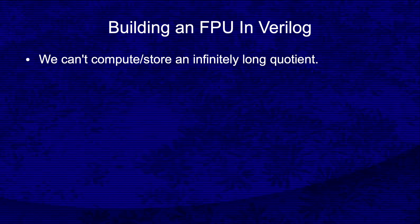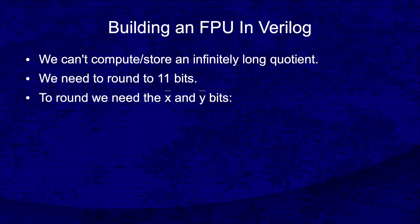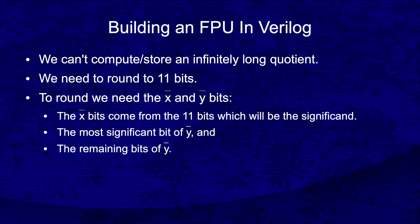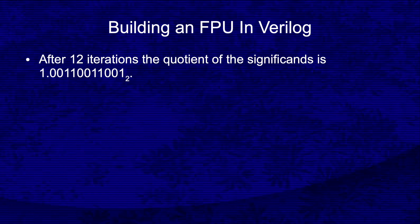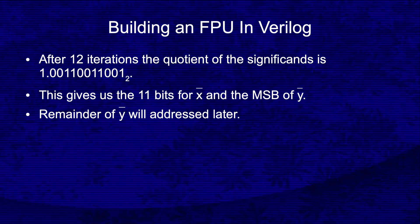This tells us we've found an infinitely repeating digit pattern in the quotient. We can't compute, much less store, an infinitely long quotient. We need to compute enough bits that we can accurately round the binary 16 result to an 11-bit significand. When rounding, we need the x-bar and y-bar bits. The x-bar bits will become the rounded significand. The y-bar bits exist in two parts: the most significant bit of y-bar and the remaining bits of y-bar. If we perform 12 iterations of the division, our quotient will be 1.00110011001 — the 12th digit being the most significant bit of y-bar. Computing the remaining bits of y-bar will be discussed later.